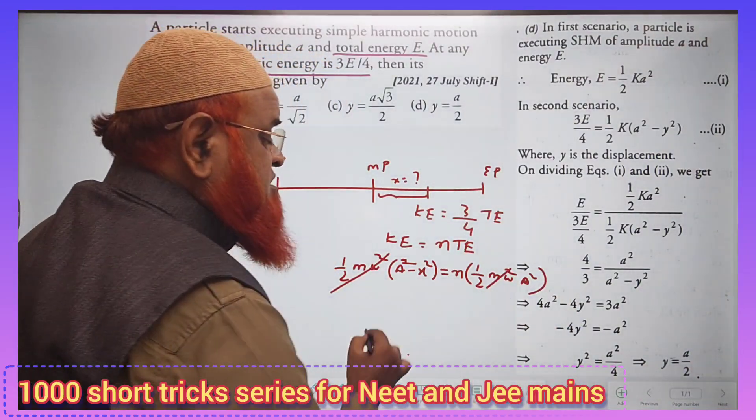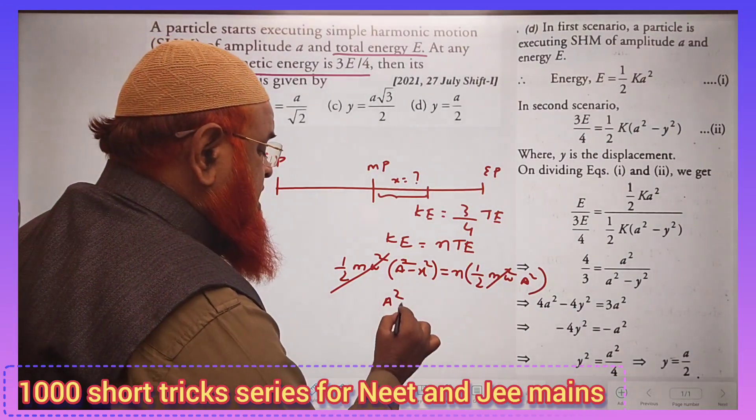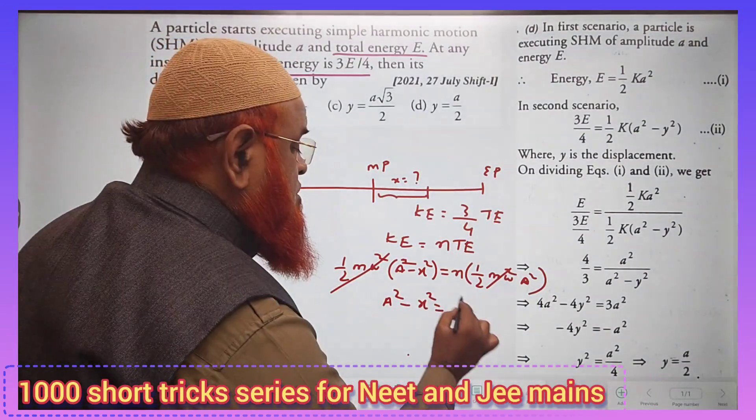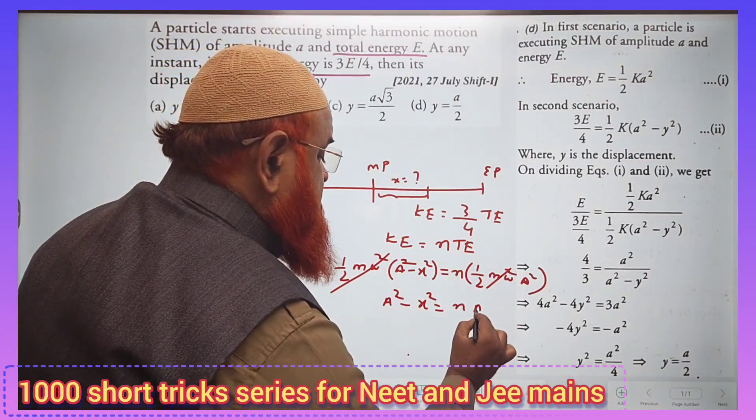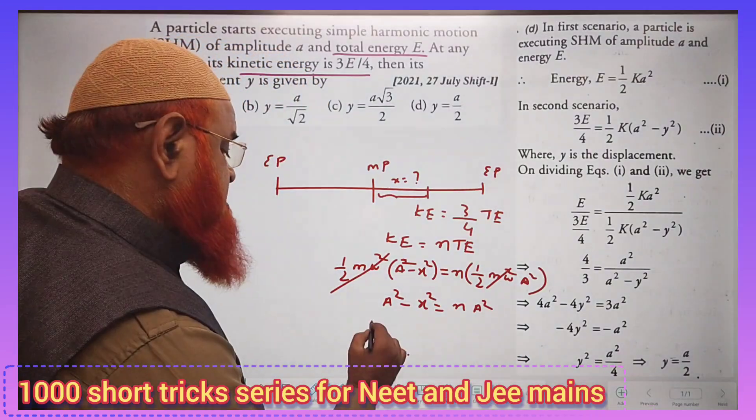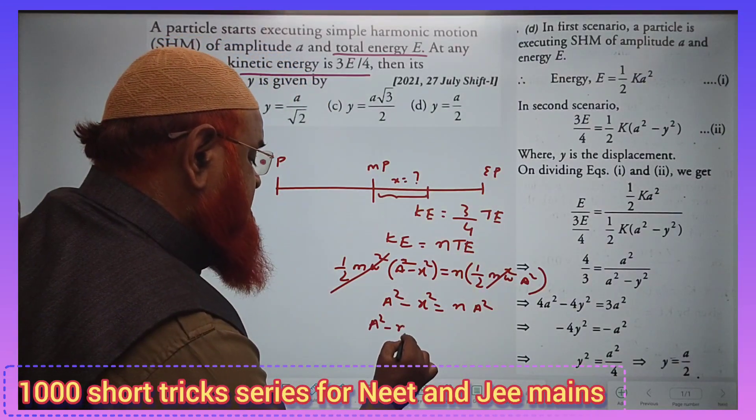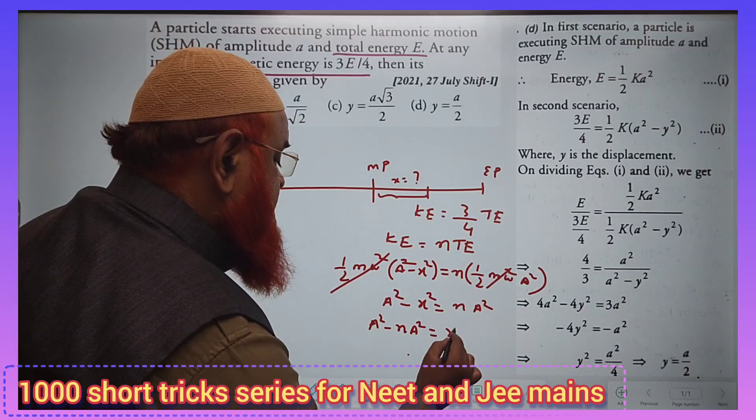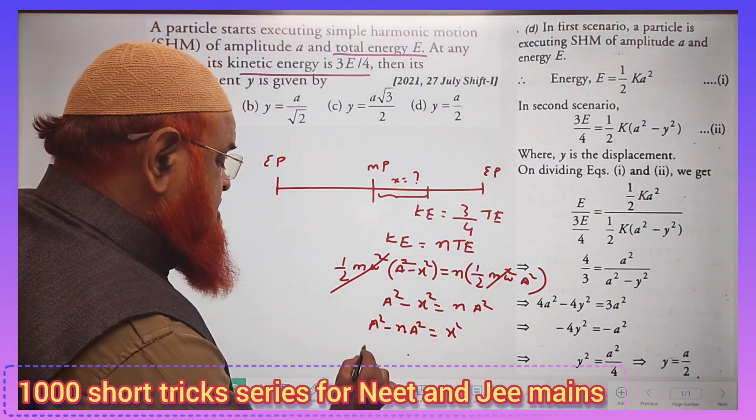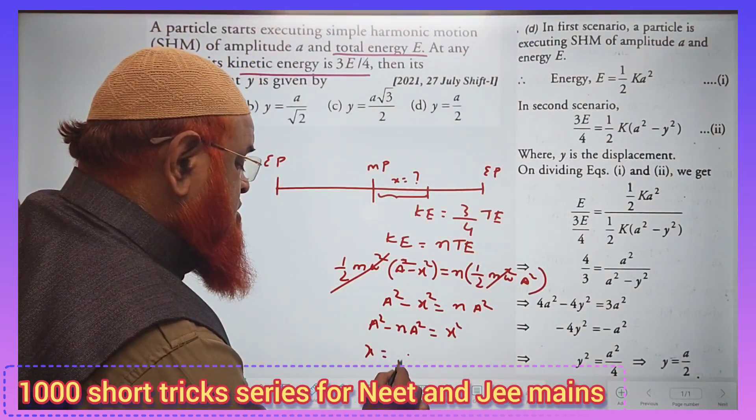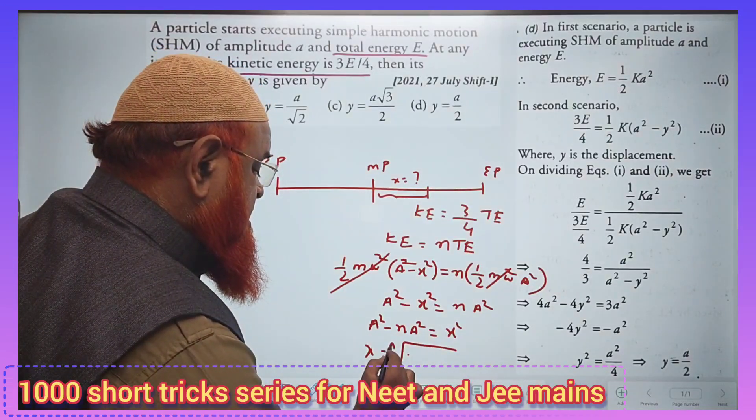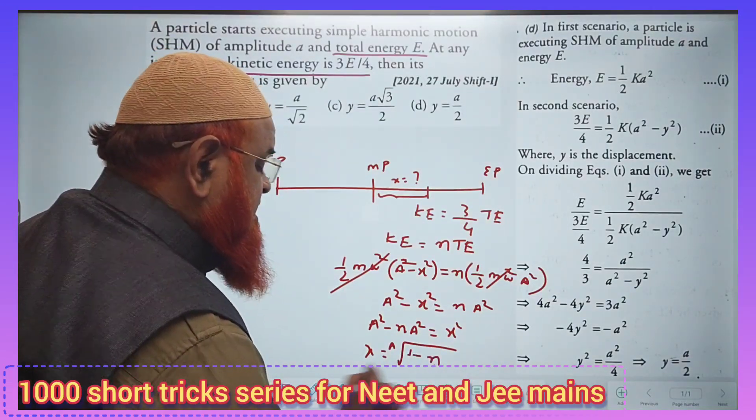Then half m omega square gets cancelled here. Now a square minus x square is equal to n times of a square. So take this left side a square minus n a square is equal to x square towards right. So therefore x is going to become square root of a into 1 minus n.